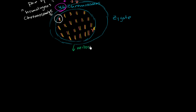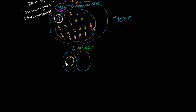After one round of mitosis, it is now two cells. Each of these cells, in my nucleus, I still have 2n — the diploid number. That's what mitosis does: it essentially replicates the entire cell, so you have the same number of chromosomes. And then this process is just going to keep happening.